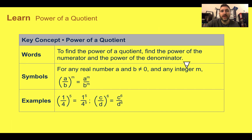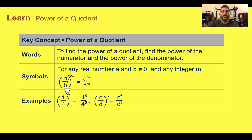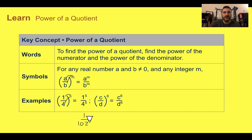The key concept is the power of a quotient. For any real number a where b is not zero, and any integer m, if we take that m we can distribute it to both a and b — to both the numerator and the denominator. So if we had 1 fourth to the 5th, that would be the same as 1 to the 5th over 4 to the 5th, which gives us 1 over 1,024.